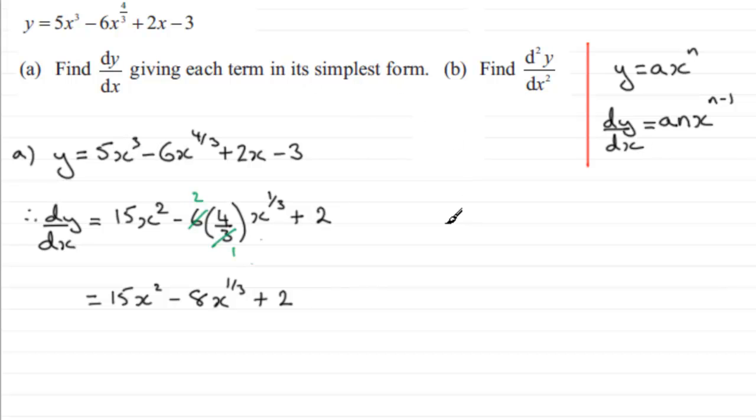That is giving each term in its simplest form. It's up to you whether you want to change this, you could say that x to the power third is the cube root of x. But when I look at what they gave us here, they wrote this as x to the power four thirds, so I'm just going to leave it in that form.